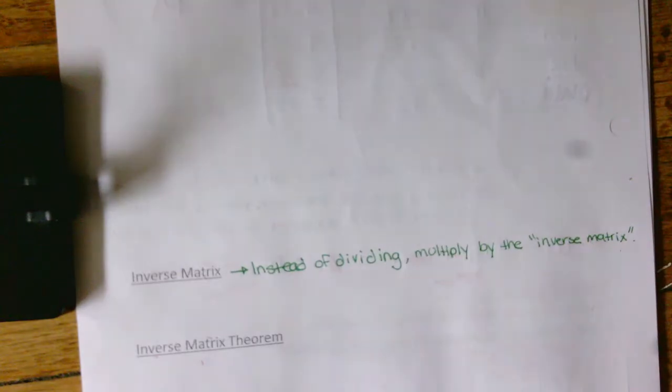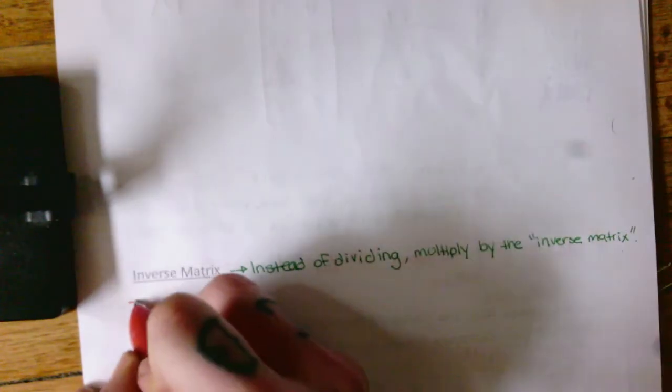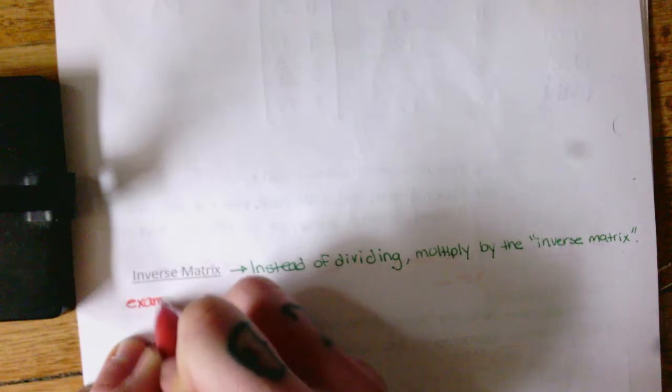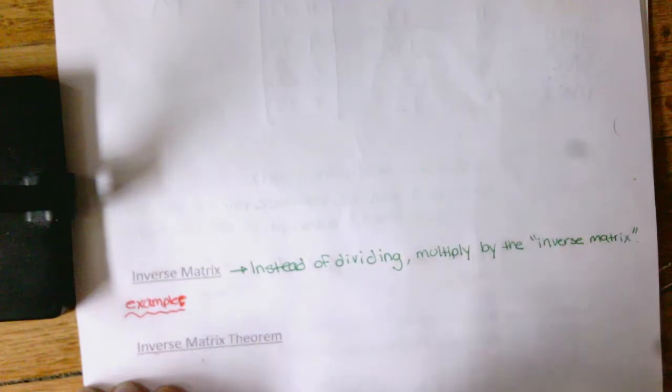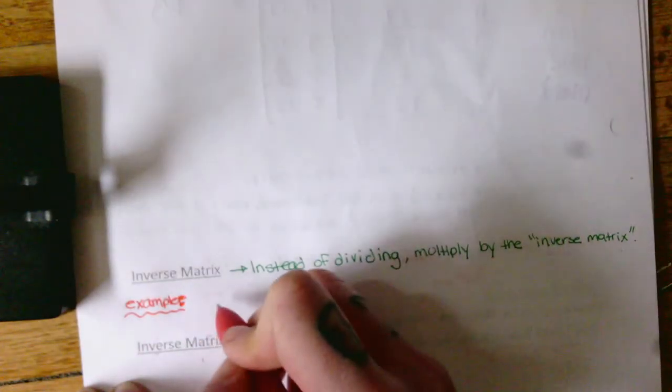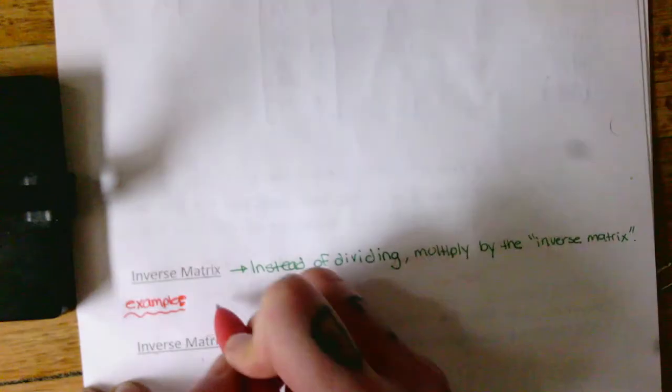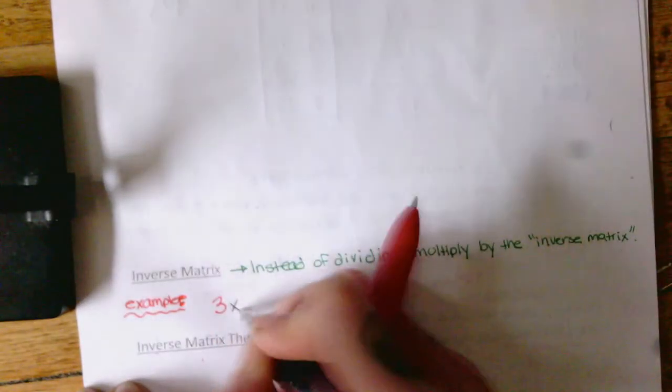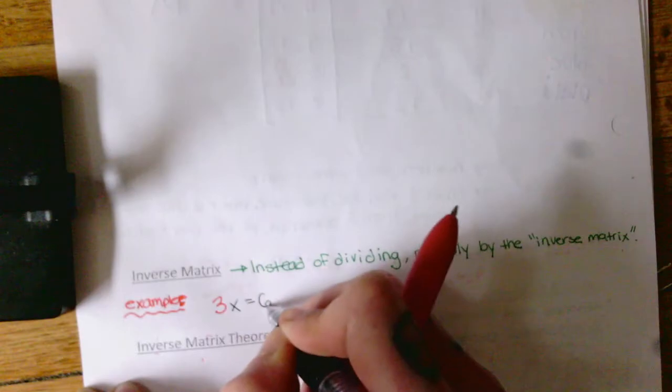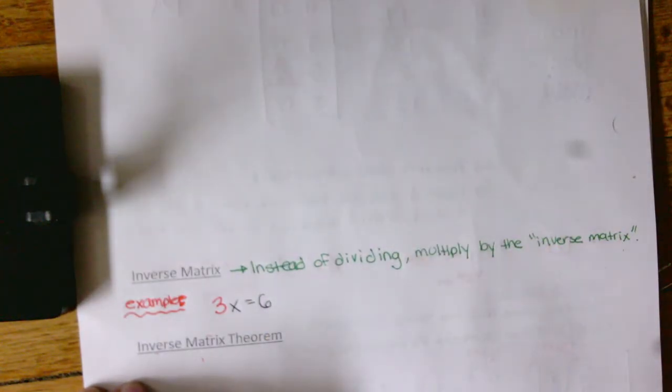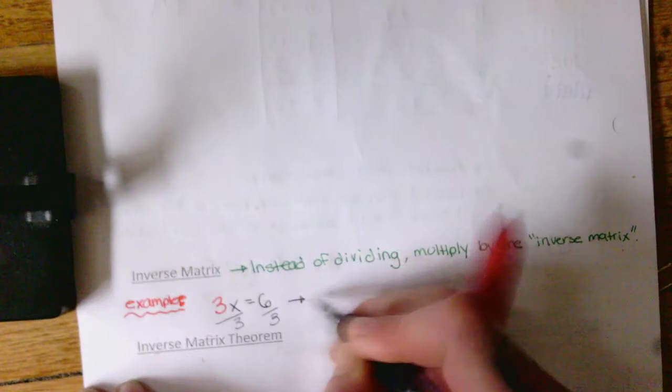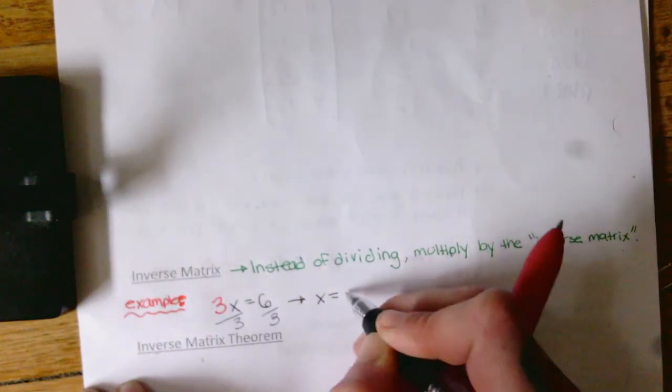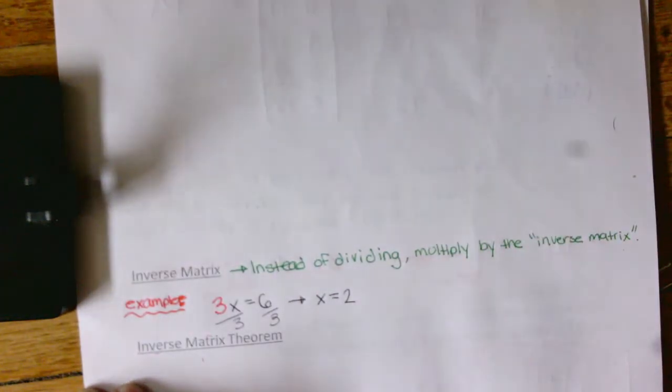Inverse matrix. Okay, what does that mean to us? Okay, so for example, let's say I have this equation. How about we want 3x equals 6. Okay, now normally I would just divide by 3, divide by 3, divide by 3, and we would know that our answer is x equals 2.